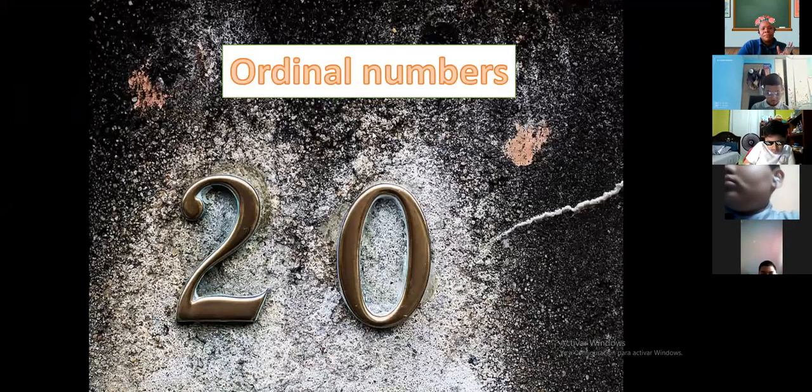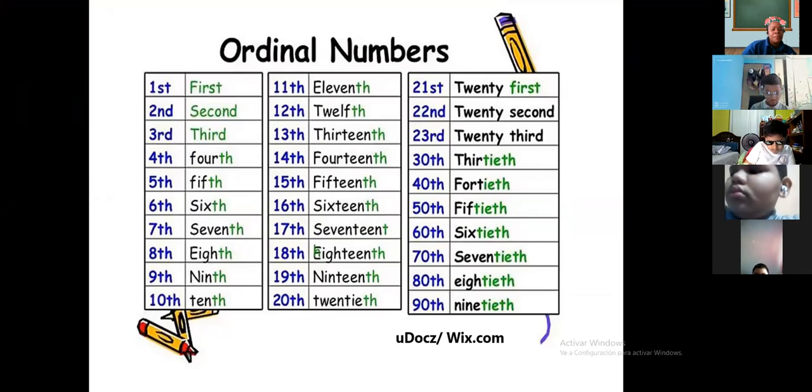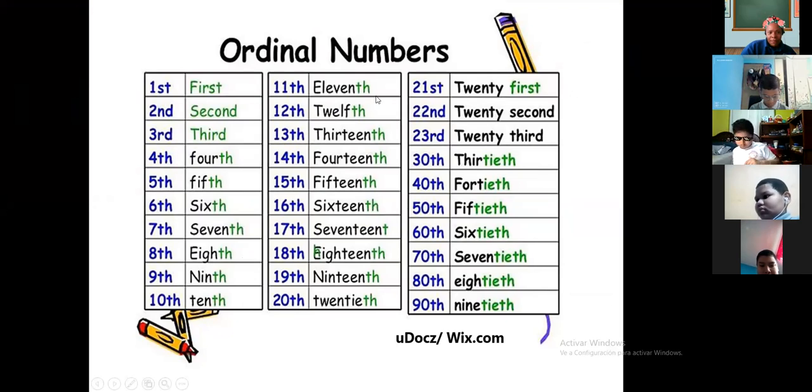Ordinal numbers. Ordinal numbers, remember, they are 1st, 2nd, 3rd, 4th, 5th, 6th, 7th, 8th, 9th, 10th, 11th, 12th, 13th, 14th, 2nd, 19th, 24th, 22nd, 23rd.